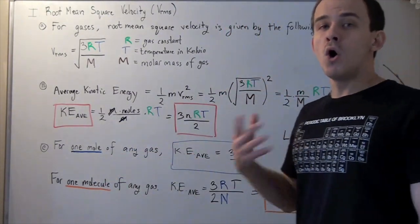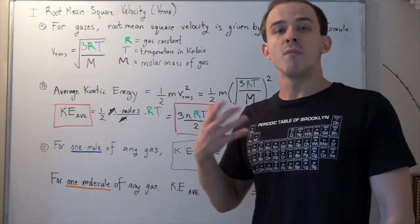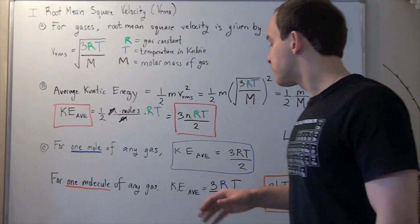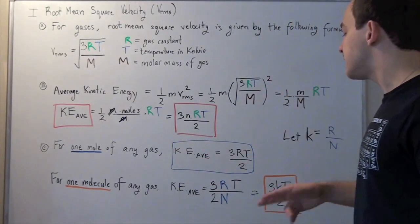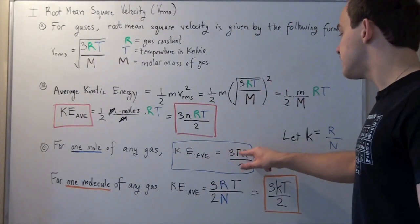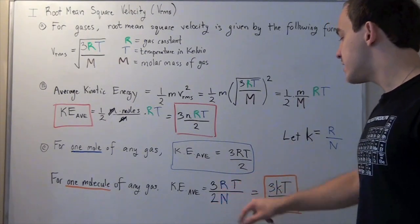Well remember, a mole has an Avogadro's number of molecules. So I simply take my formula and divide it by N. So 3 times R times T divided by 2N.